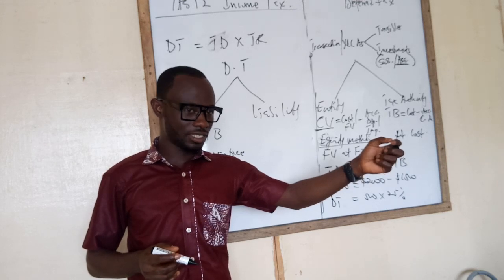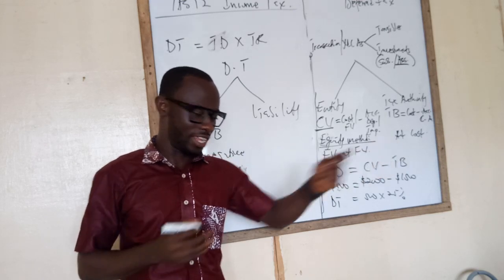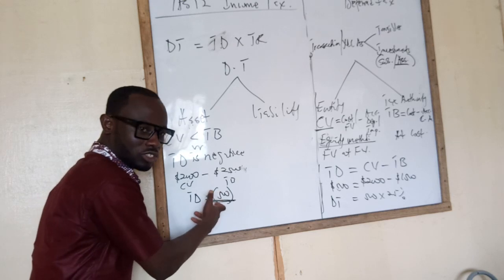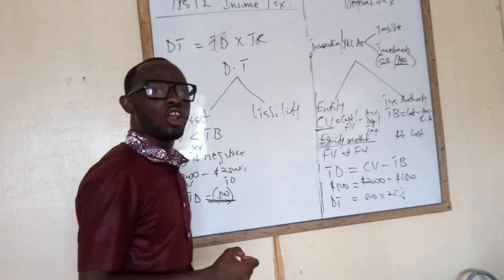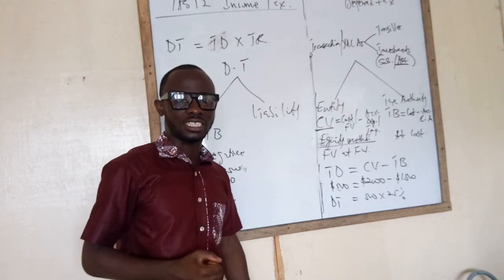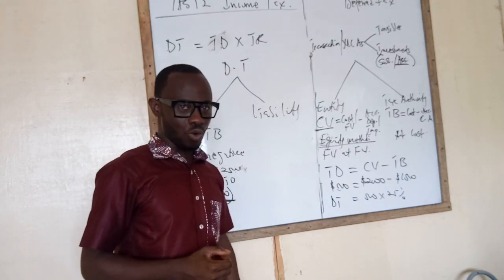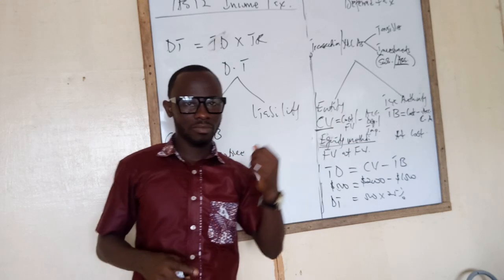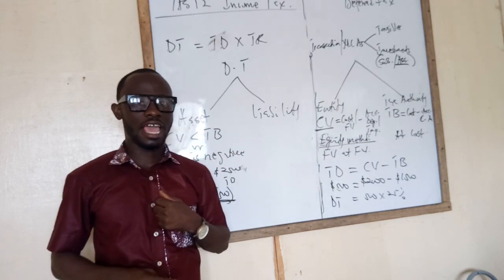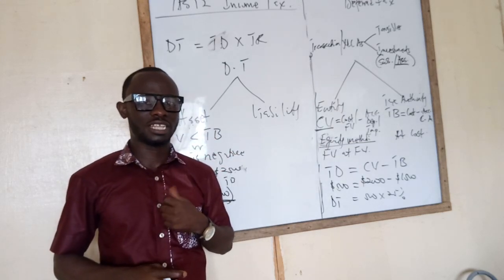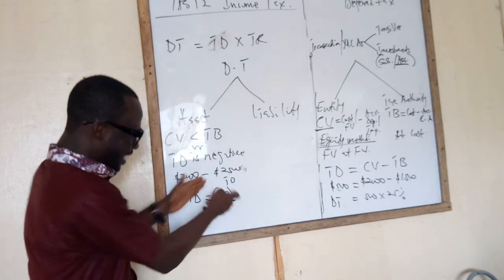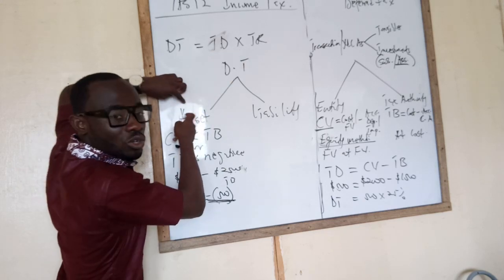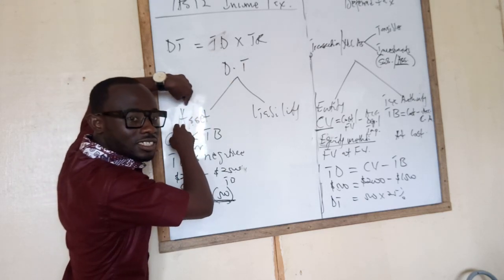It means when you sell this asset, you make a loss. If you make a loss, do you pay tax? No. Rather, you claim a grant from the tax authority. So that becomes a deferred tax asset.